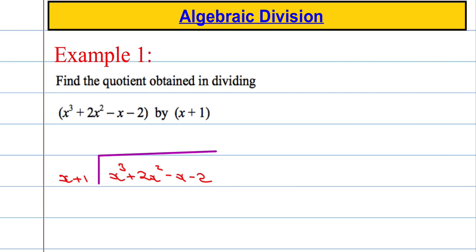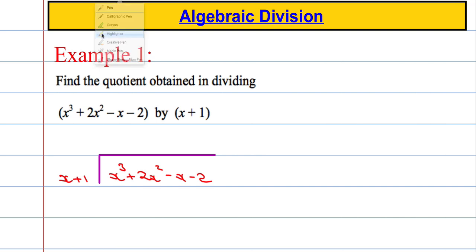I like the bus stop method — long division. Every time we're dividing in, we're just going to look at the x value and divide it into each term. So, x cubed divided by x is x squared. Then I take the x squared and multiply by this expression here: x squared times x is x cubed, and x squared times 1 is x squared.